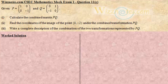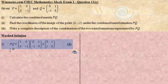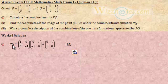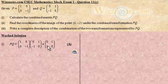For our solution, we simply multiply matrix P by matrix Q. Matrix P is [1, 0; 0, -1] and matrix Q is [0, 1; -1, 0]. How we multiply matrices is that we multiply the row of the first matrix by the columns of the second matrix. This is a 2×2 matrix and that's a 2×2 matrix, so the result is going to be a 2×2 matrix.